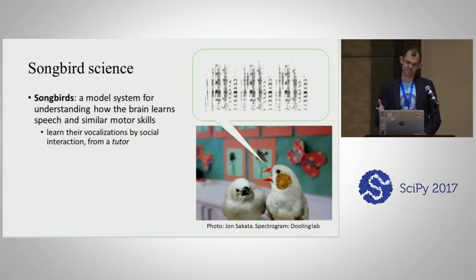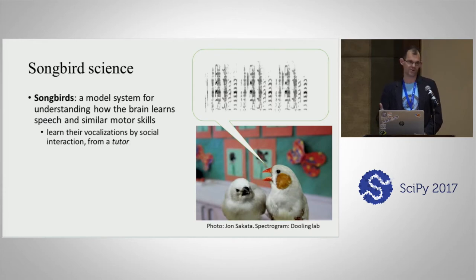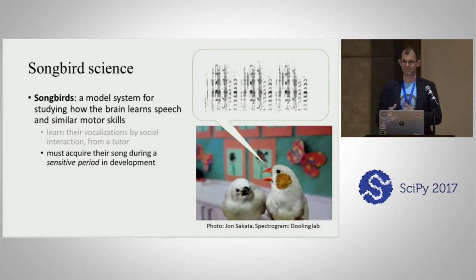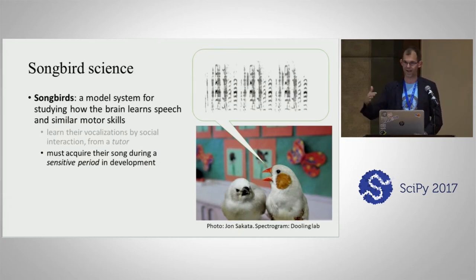Similarly, songbirds learn their vocalizations by social interaction from a tutor — in a lot of species, it's a son learning from the father. They have to be exposed to this vocalization during a sensitive period in development. If they aren't, they can never acquire it as well as they would have.